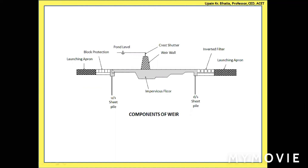Along with the impervious floor, we have an upstream sheet pile and a downstream sheet pile. The upstream side has the storage, and the downstream is the other side. On the upstream end of the impervious floor we install the upstream sheet pile, and on the downstream end we install the downstream sheet pile. What you see as a line in the cross-section is actually a sheet running perpendicular to the screen — that is why it is called a sheet pile.